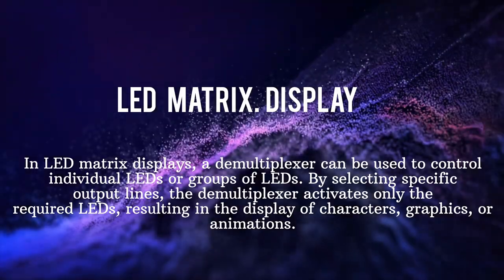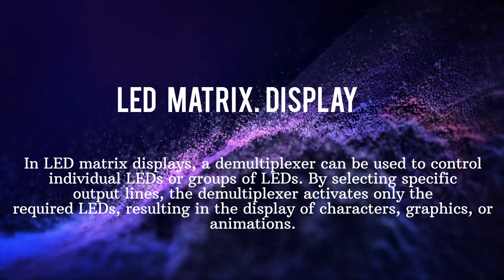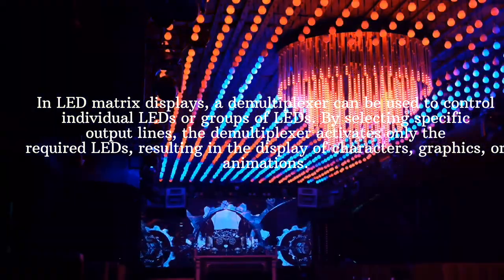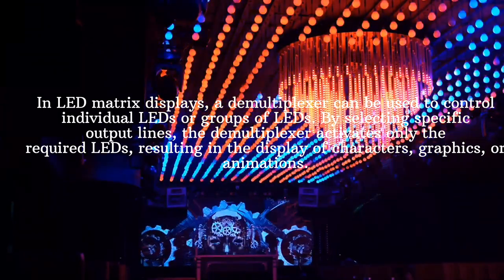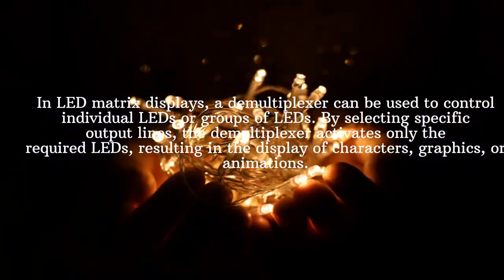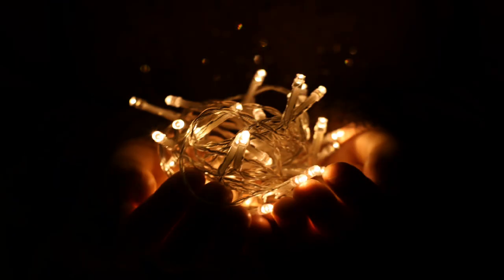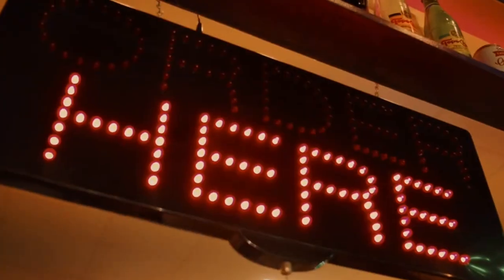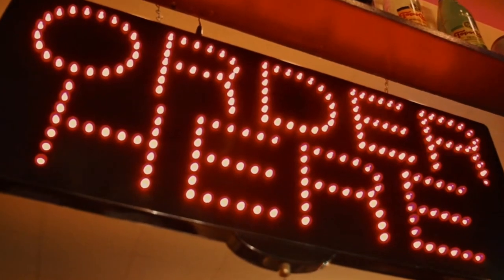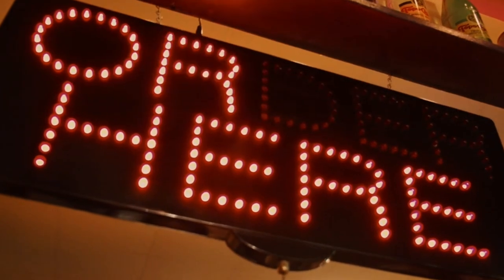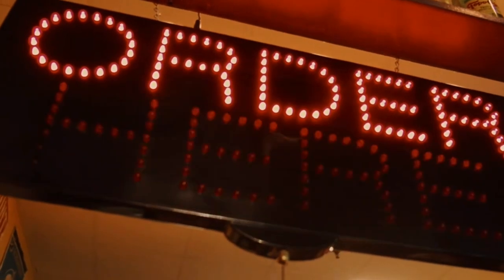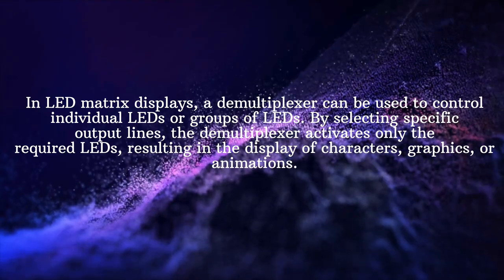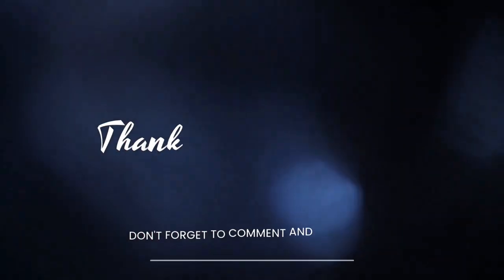In LED matrix displays, a demultiplexer can be used to control individual LEDs or groups of LEDs by selecting specific output lines. The demultiplexer activates only the required LEDs, resulting in the display of characters, graphics, or animations.